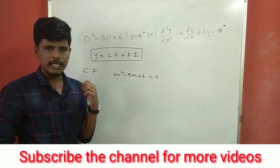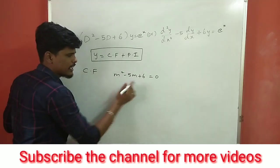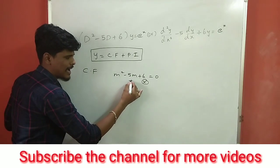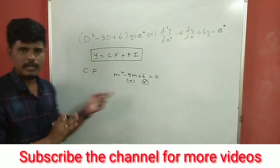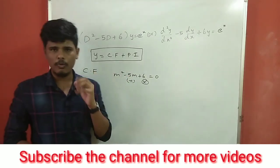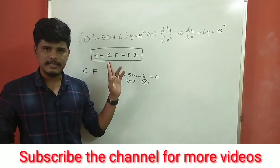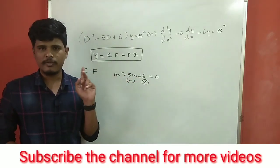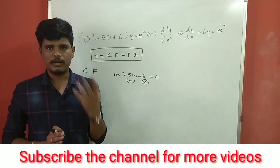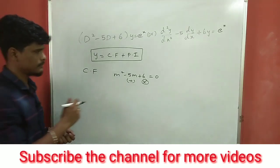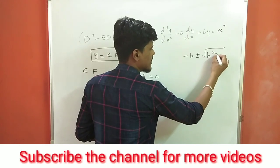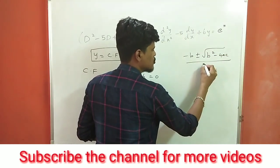For the complementary function, we learn the equation by multiplying and adding the coefficients. For example, 2 into 3 is 6, and 2 plus 3 is 5, then minus 2 into minus 3. If you cannot factor it directly, we have the quadratic formula: minus b plus or minus root of b squared minus 4ac, divided by 2a.